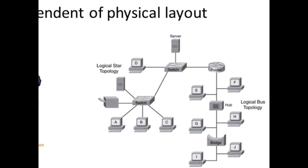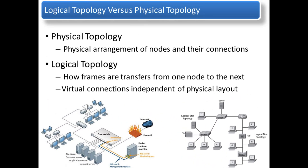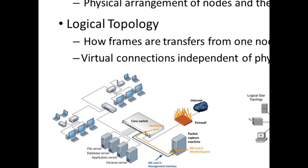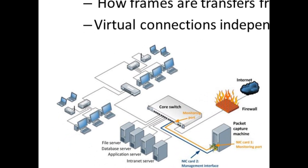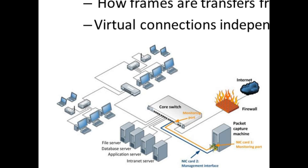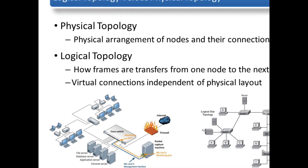Physical topologies, on the other hand, are rather simple to understand. They are graphical representations of where a company's network wiring and equipment can be located in a building. Here we can see what nodes are connected to what switch and where these devices can be found.